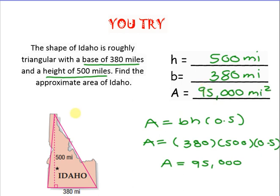Go ahead and pause the video if you're not done. The answer to this one was that the area was 95,000 miles to the second power. You needed to do 380 times 500 times 0.5 — and that's about the square miles of Idaho.